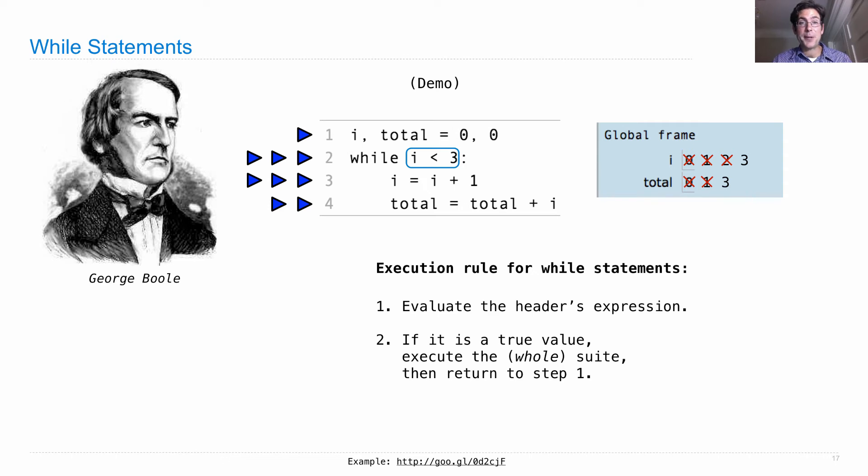We're still going to update total because we execute the whole suite before returning to step 1 and never looking at whether i is less than 3. So i is currently not less than 3, but that doesn't matter. We're still going to finish evaluating the whole suite because we're right here in the middle of the suite.